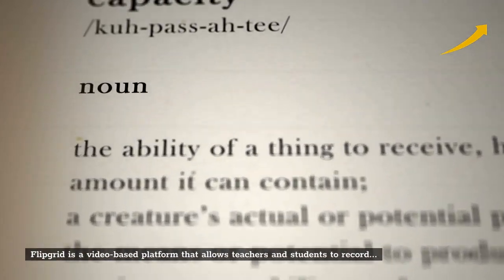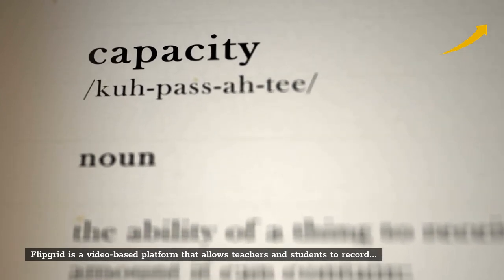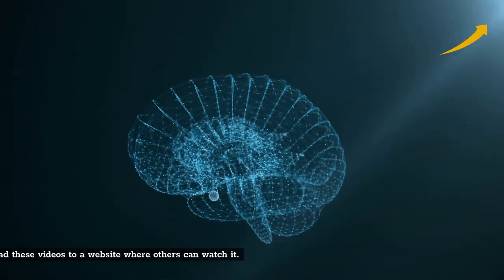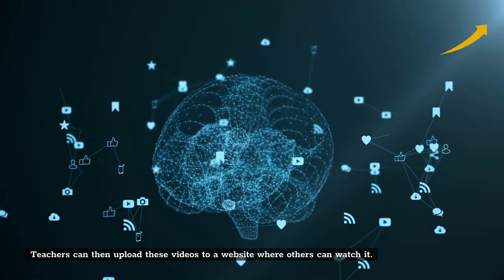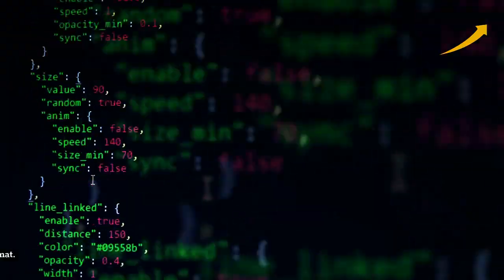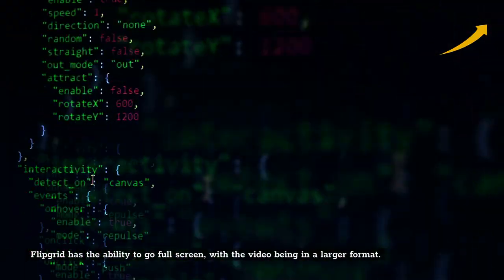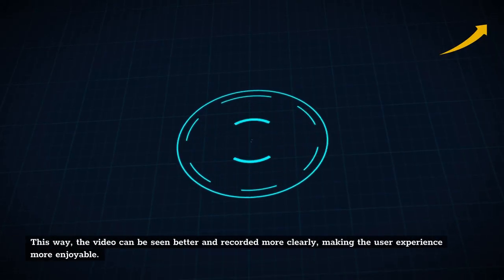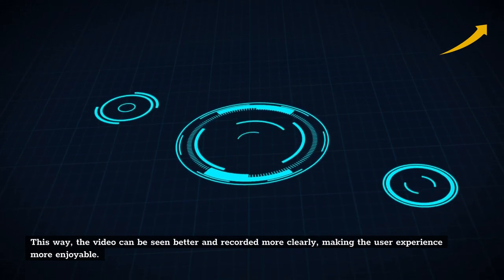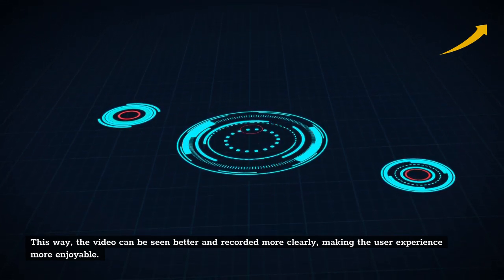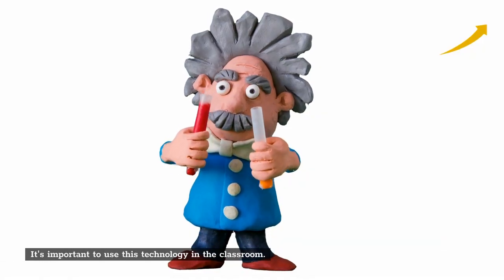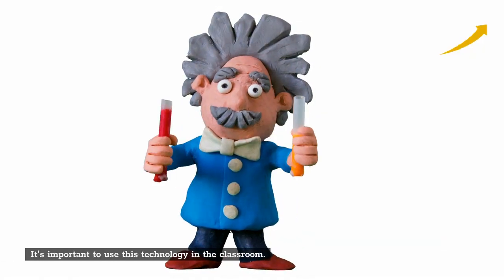Flipgrid. Flipgrid is a video-based platform that allows teachers and students to record videos with the ability to stop and start recording at any time. Teachers can then upload these videos to a website where others can watch it. Flipgrid has the ability to go full screen with the video being in a larger format. This way the video can be seen better and recorded more clearly, making the user experience more enjoyable.